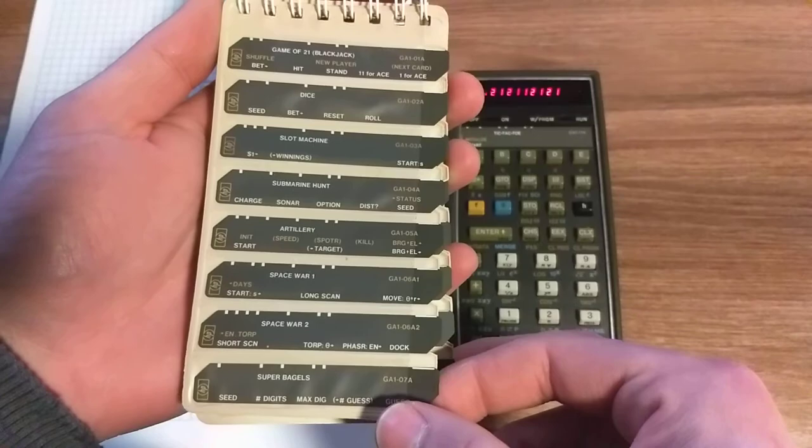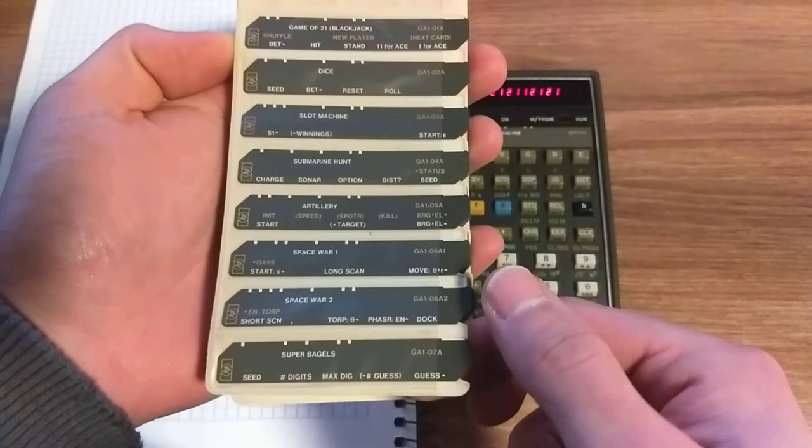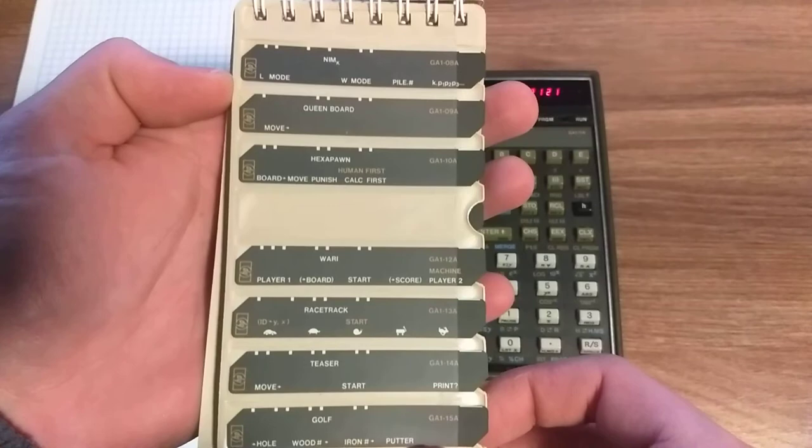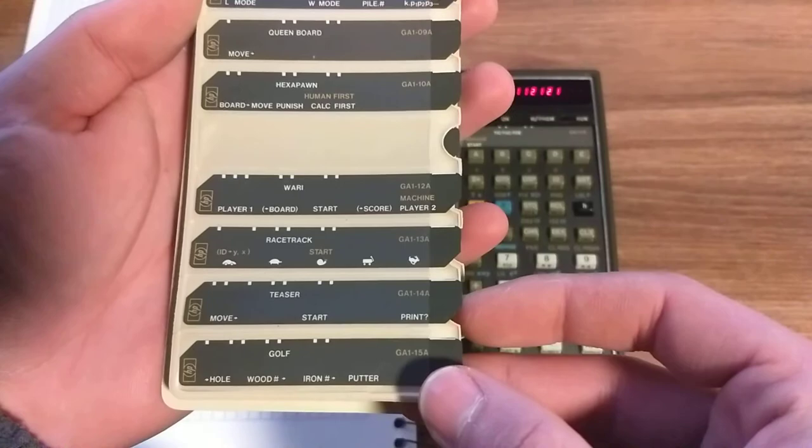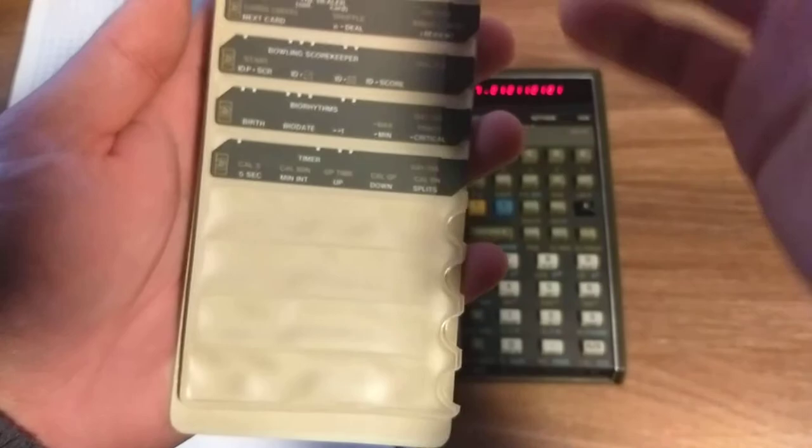Like blackjack, dice game, slot machines, submarine hunt, artillery, Space War One, Space War Two, Super Bagels, Nim, Queen Board, X-apon-Worn. There's a racetrack game that actually comes with a manual racetrack so you can follow each of the racers. There's teasers and a golf game.